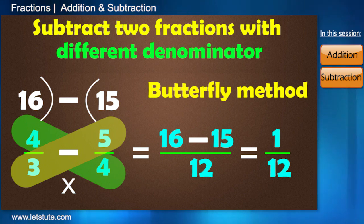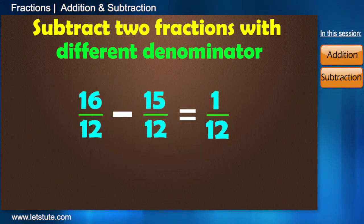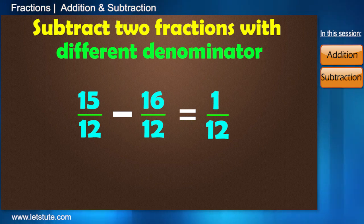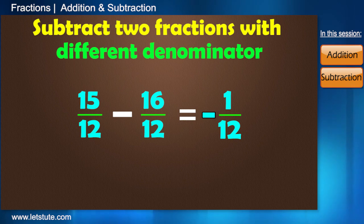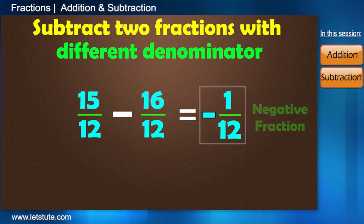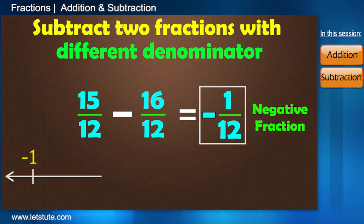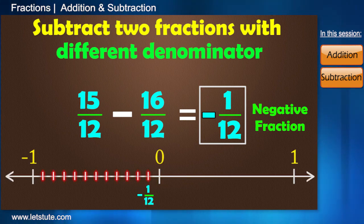But then, what would have happened if I would have subtracted 16 by 12 from 15 by 12? That would have just given me minus 1 by 12, which is nothing but just a negative fraction. Negative fraction is nothing but just a fraction which belongs to the negative side of the number line.